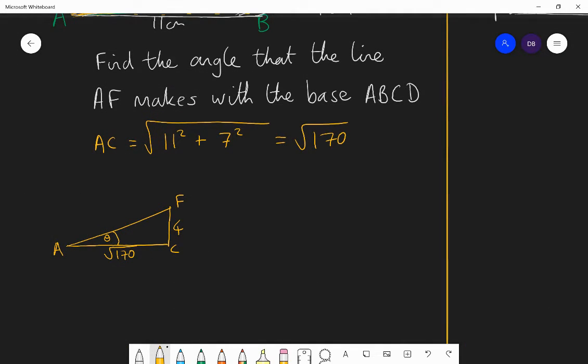So I want to find theta. I have the opposite and the adjacent, so I need to use the tan ratio. So I know that tan theta is equal to the opposite divided by the adjacent. So tan theta is 4 divided by root 170. And then on my calculator, I do theta is the inverse of tan of that value, 4 over root 170. And that gives me 17.1 degrees to one decimal place.